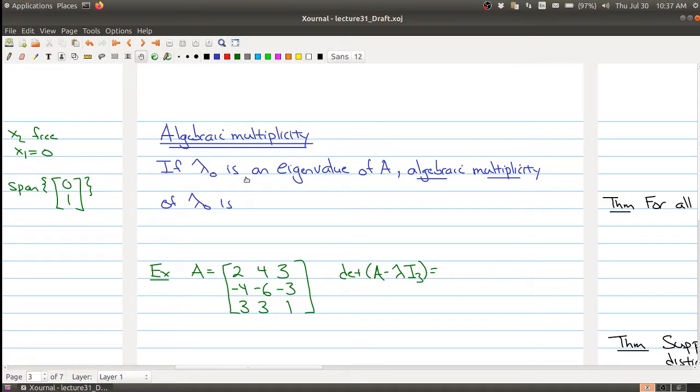Well if lambda naught is an eigenvalue of A, the algebraic multiplicity of lambda naught is the exponent of the term lambda naught minus lambda in the factorization of the characteristic polynomial. So you take the characteristic polynomial and you factor it and you're counting the number of times lambda naught minus lambda shows up in the factorization.